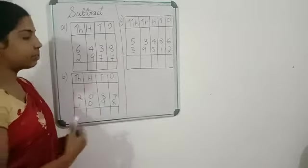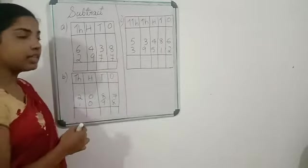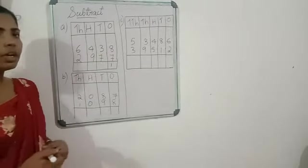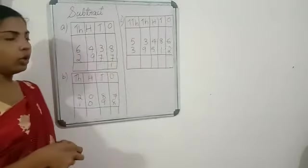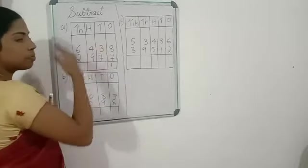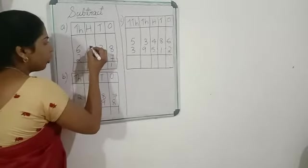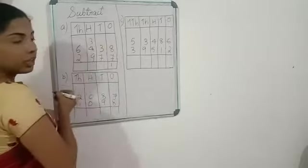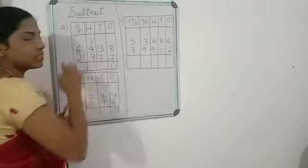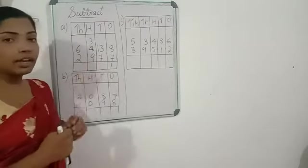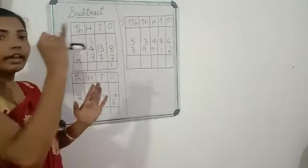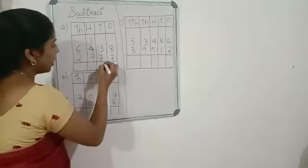We start from the ones place. Eight minus seven is one. Now three minus seven is not possible — three is smaller and seven is larger. So we have to borrow from the next place. When we borrow one, the four becomes three and the three becomes thirteen. Thirteen minus seven: after seven, eight, nine, ten, eleven, twelve, thirteen — that is six.